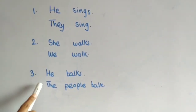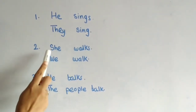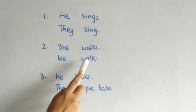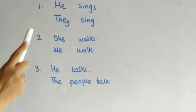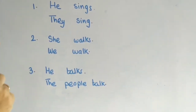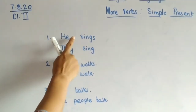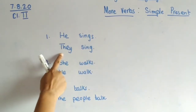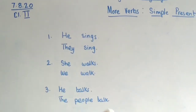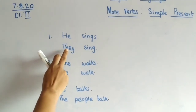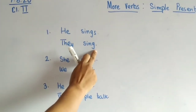Look at these sentences. He sings. They sing. She walks. We walk. He talks. The people talk. Here, 'he' is one person, so we add S to the verb — he sings, he plays. Now 'they' is more than one, it means many people. So when it is plural, the verb has the S removed — it is omitted.